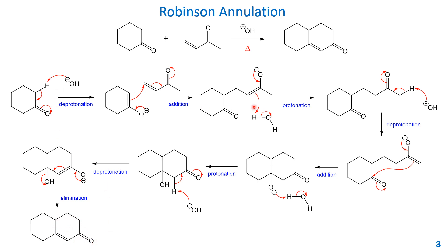To summarize the whole mechanism: from here to here is the Michael reaction, and from here to here is the aldol condensation. If you have any questions, please let me know — and good luck!